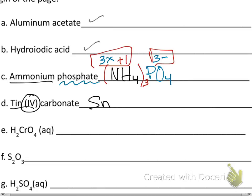For tin(IV) carbonate: the Roman numeral IV means the tin has a 4+ charge — it does not mean there are four tin atoms, which is a common mistake. Carbonate from the back of the table is CO3 2−. To balance 4+ and 2−, multiply the carbonate by two. We show that with parentheses and a subscript 2, giving 4− to balance the 4+.